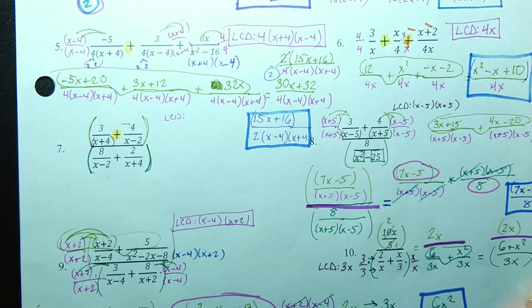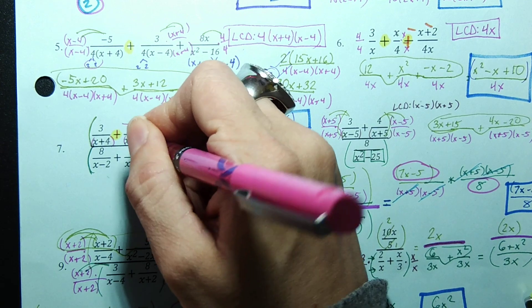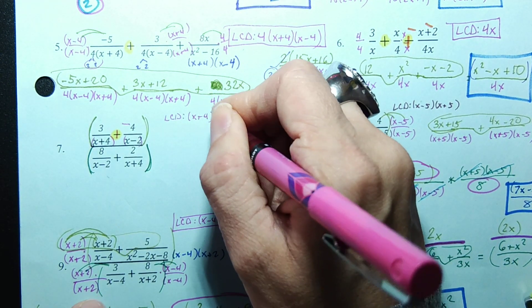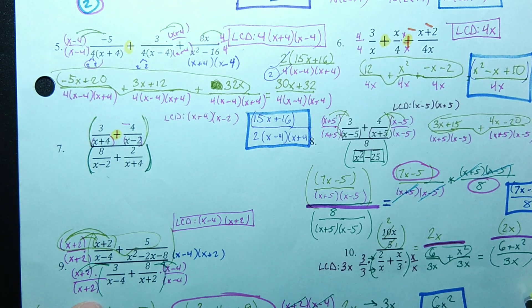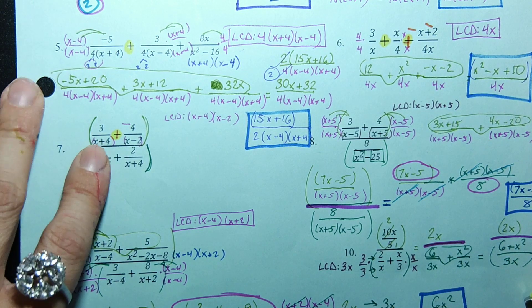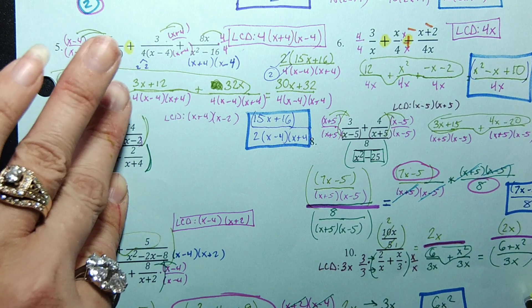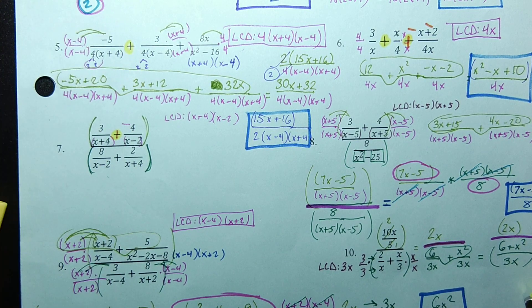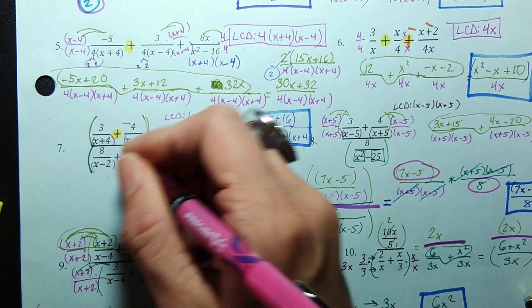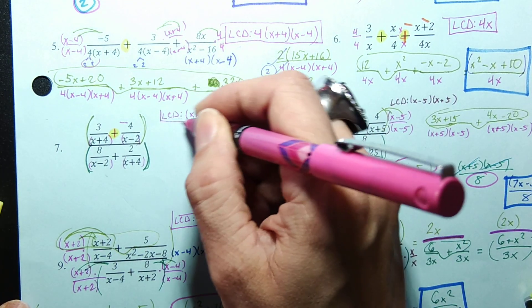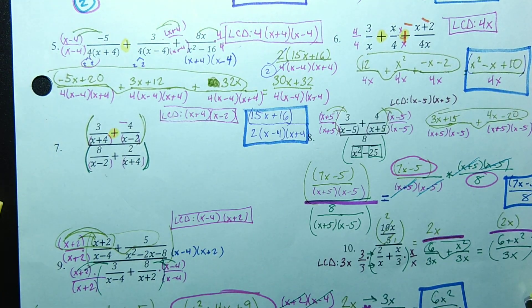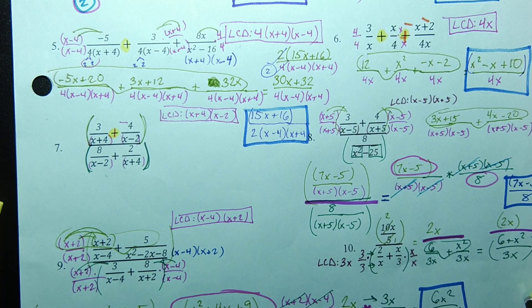First, we've got x plus 4. We've got x minus 2. So I'm going to have to include both of them as part of my LCD. So that's what I'm going to use for my least common denominator of the top. What am I going to use for the least common denominator of the bottom? The same thing.